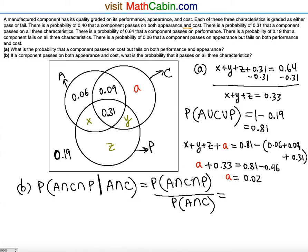The intersection of all three circles is 0.31, and the intersection of A and C is 0.40. Dividing gives 0.31 divided by 0.40, which equals 0.775. So the answer to part B is 0.775.